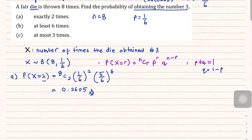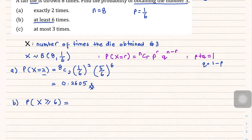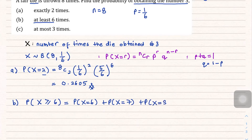Part b is at least six times. From the sentence, we change the notation to P(X ≥ 6). For binomial, since it is greater than or equal to six, we must sum up to the final trial, giving P(X=6) + P(X=7) + P(X=8).